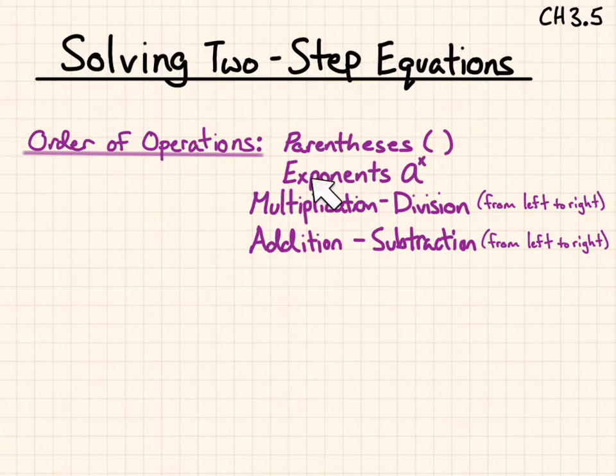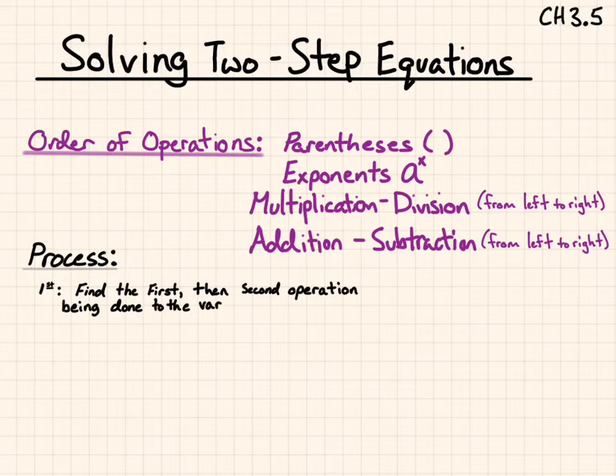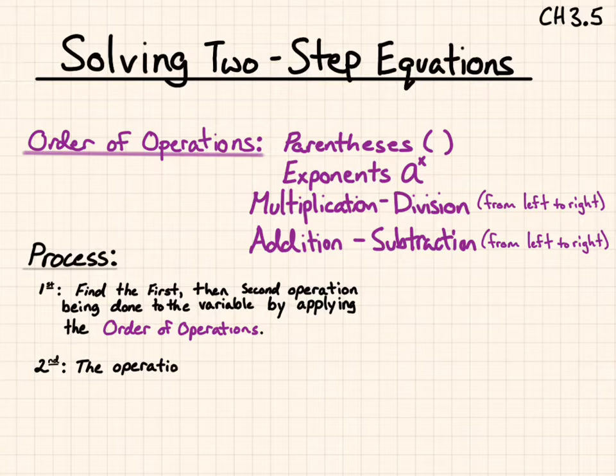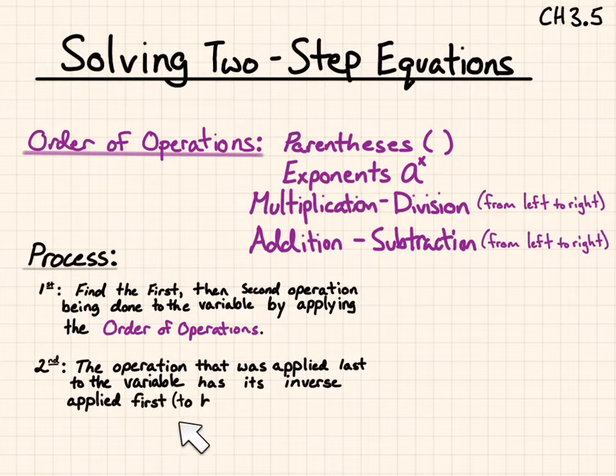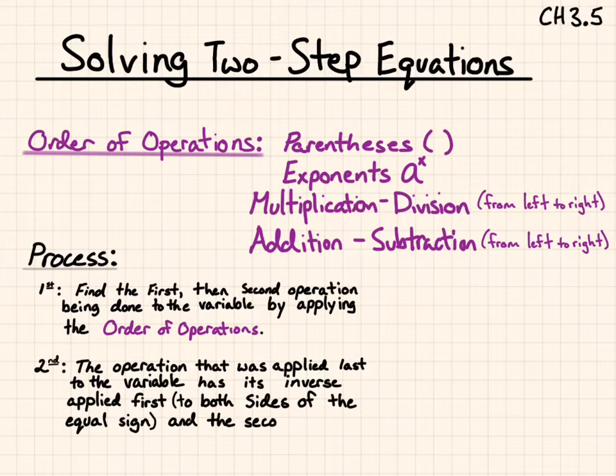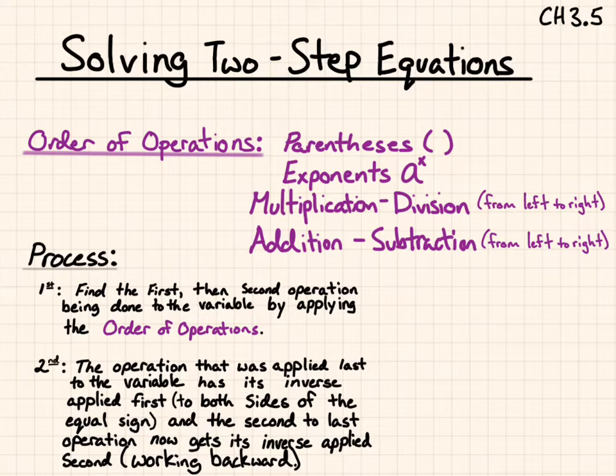Now, keeping that in mind, we're always going to be thinking about our order of operations. We're going to talk about the process to solve. First, find the first, then second operation being done to the variable by applying the order of operations. Second, the operation that was applied last to the variable has its inverse applied first to both sides of the equation. And second to last operation now gets its inverse applied second, working backwards. This part can be confusing, but let's reference it back when we're going over an example.